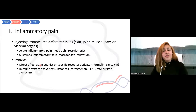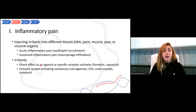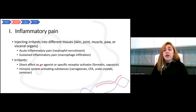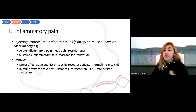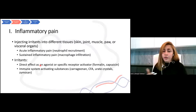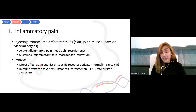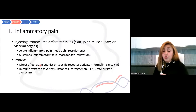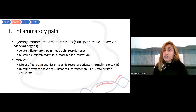The first category is inflammatory pain, which is usually made by injecting an irritant into different tissues depending on the purpose of the study. It can be injected into skin, joint, muscle, paw, visceral organs, face, or anywhere else. With that, we can have both acute inflammatory pain, which is associated with neutrophil recruitment, and sustained inflammatory pain, which is associated with macrophage infiltration.